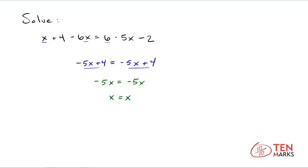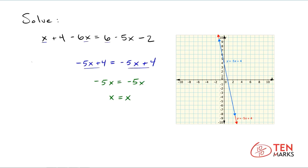Now let's see this graphically. Here's the graph that represents the problem we just solved. As you can see, there are two lines here — one is in red and the other is in blue — and they are completely aligned with one another, or they are the same line. Why does this happen?